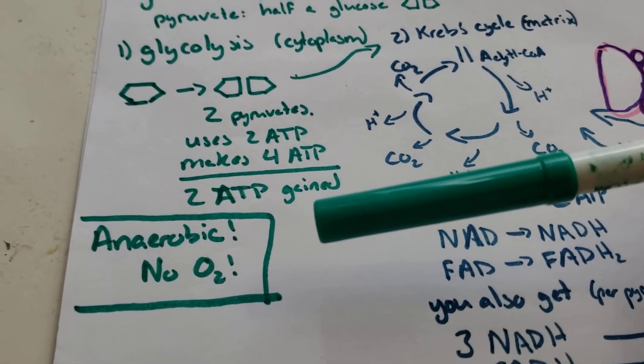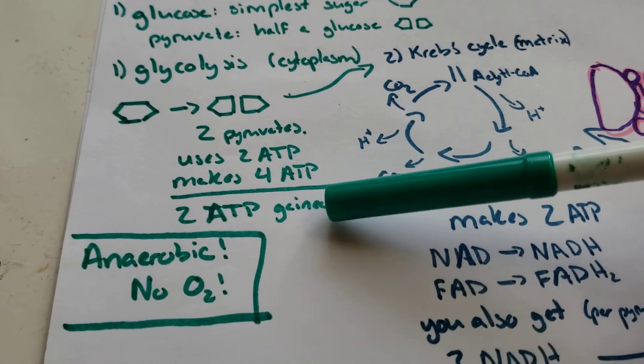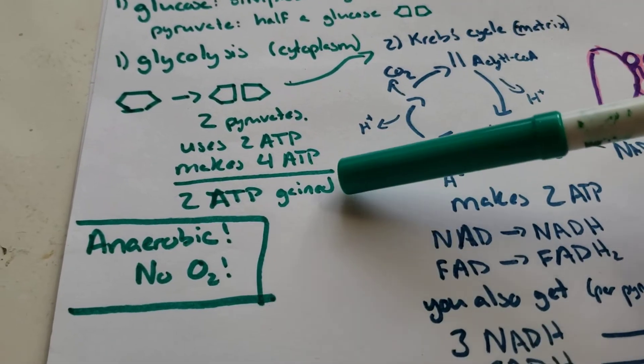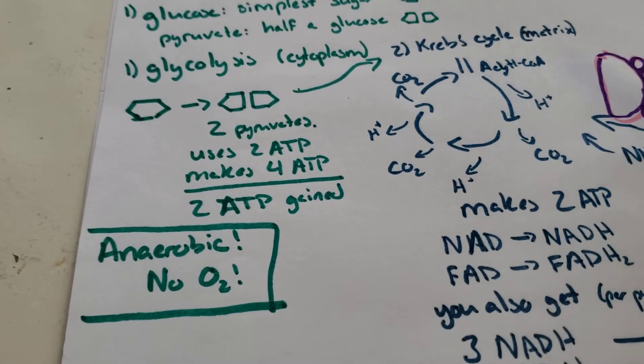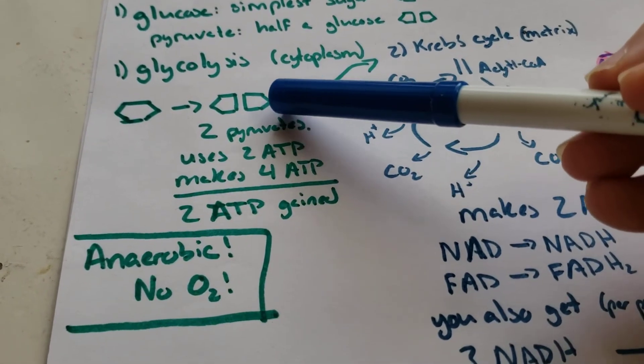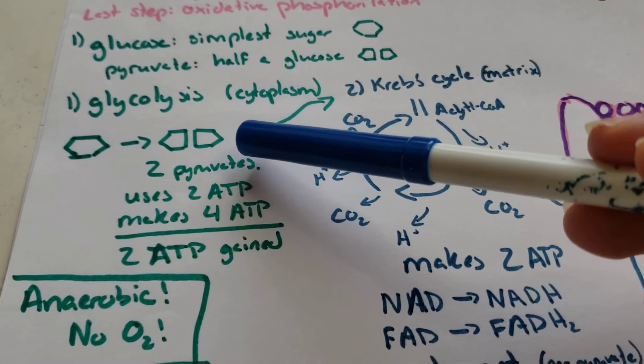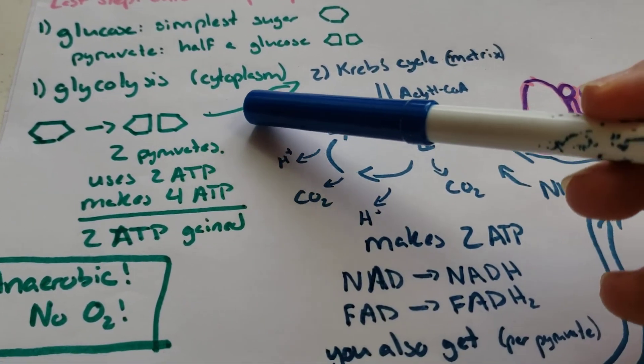But our bodies are way more complex than an itty bitty single-celled yeast. We need more than just two ATP. So our bodies take the game up a notch, and this is when we get into all of those little bitty hydrogens that are hanging off the edges of each of those corners.